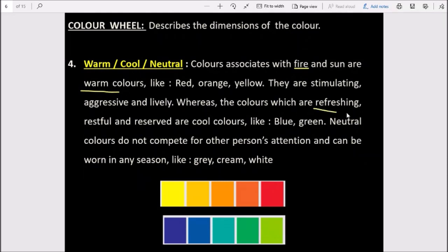The colors which are refreshing, cool, restful, and reserved are cool colors. These are also called receding colors. Examples include blue and green. Neutral colors do not have to compete for other person's attention and can be worn in any season. Black, white, grey - these colors we wear anytime. So these are our warm or advancing colors, these are cool or receding colors. We wear these in summers and usually prefer these in winters.